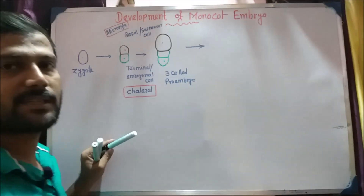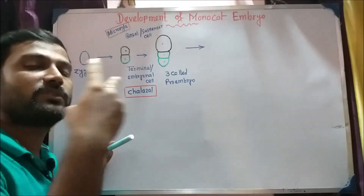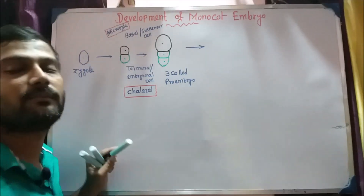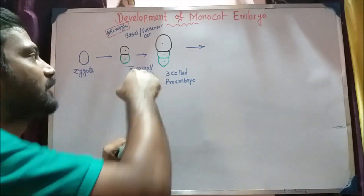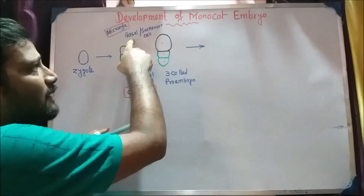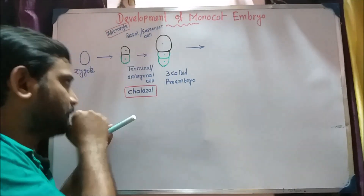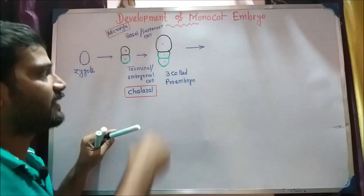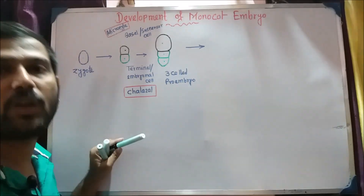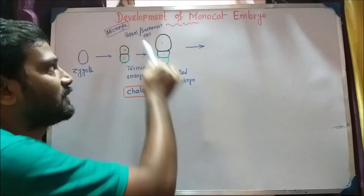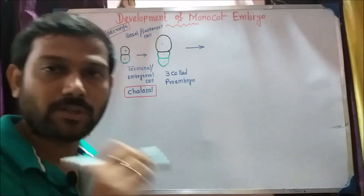This is the development stage where there is a transverse division and there are a lot of cells. The color is changed — the basal cell and the suspensor cell are in the micropyle region. This is the fourth region, which contains the terminal cell and the embryonal cell, meaning the embryo form. The basal cell gives rise to the suspensor cell.